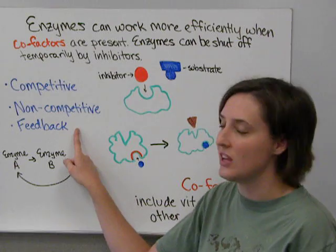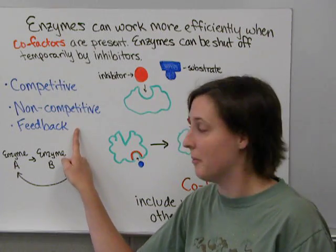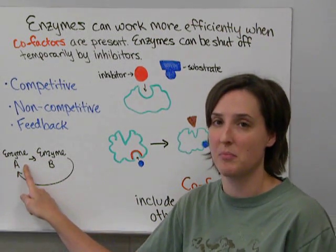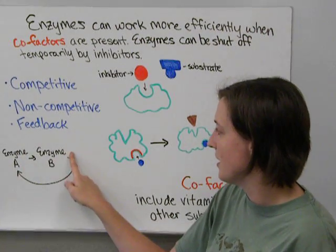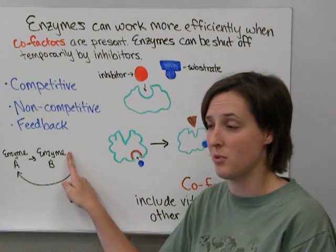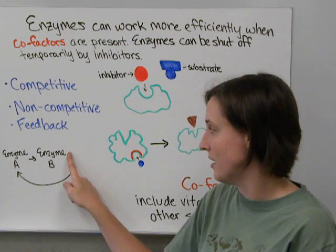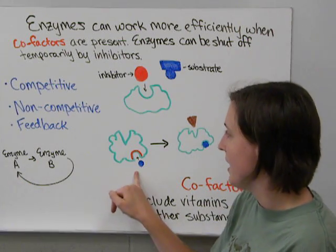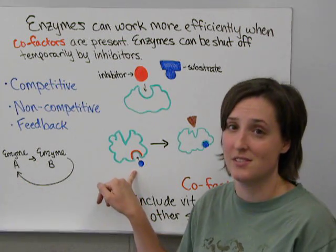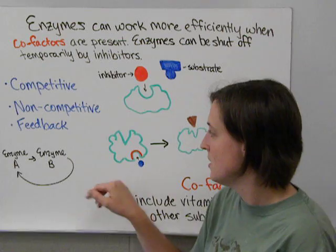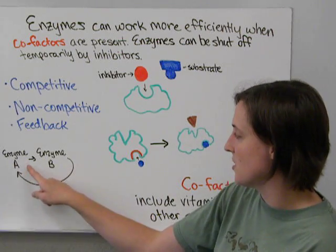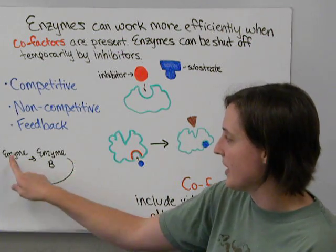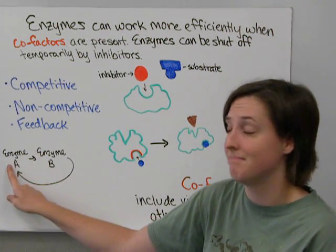The last kind is the feedback inhibitor. Enzyme A produces a product, that product feeds into enzyme B which produces another product, and that product goes back and acts on enzyme A as a feedback inhibitor. So the product of a process goes back and shuts off the first enzyme.